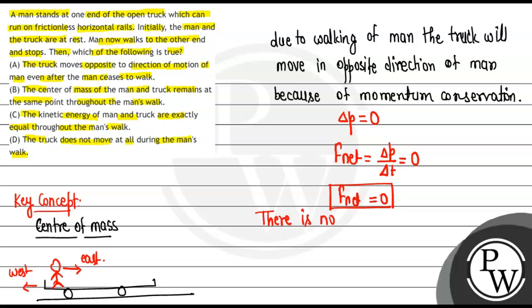There is no external force acting. And if there is no external force acting, option B is the perfect answer here. The center of mass of the man and truck remains at the same point throughout the man's walk because there is no external force acting on the truck and the man.